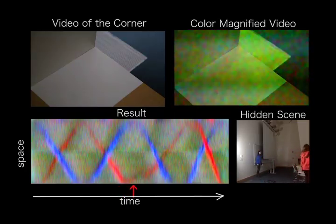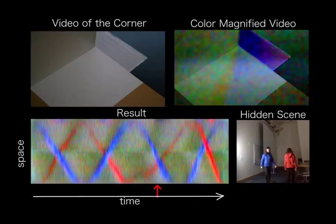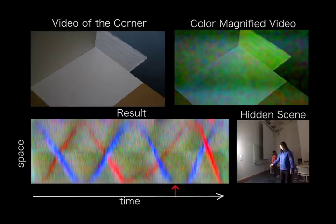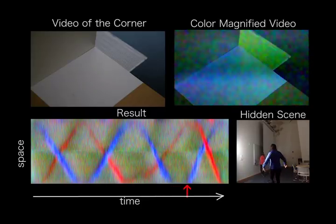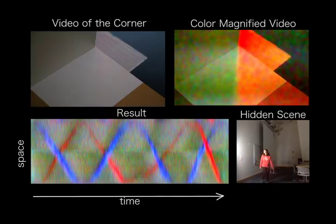Also notice that we accurately identify that the blue person walks in front of the red person three times before the red person walks in front of the blue. To best illustrate this idea, we have used a bright light to illuminate the hidden people so that the colors of their clothing are clearly seen in the reconstruction.